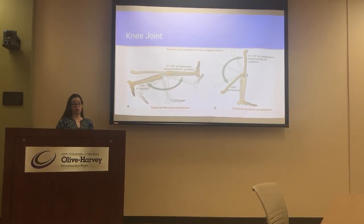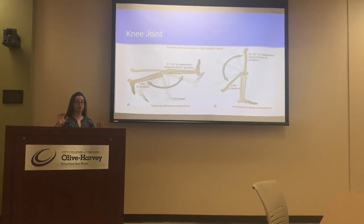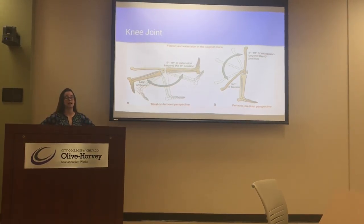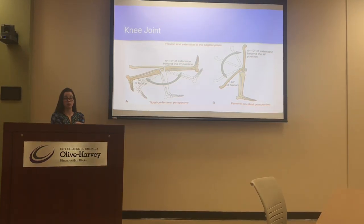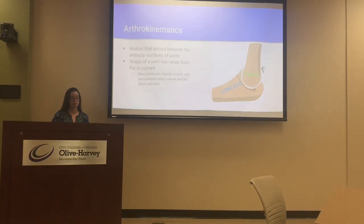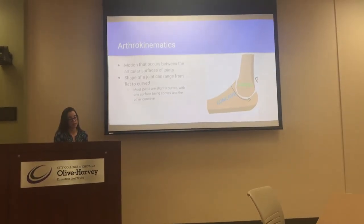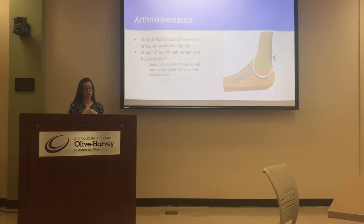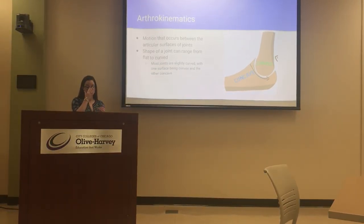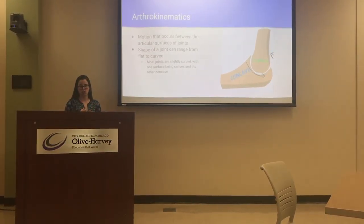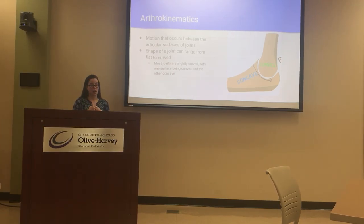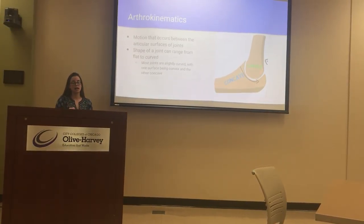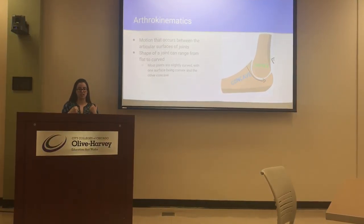Another example using the knee: open would be kicking the ball, whereas closed would be doing something like a squat or sitting down, because your foot is not moving when you're squatting. Arthrokinematics is the motion that our bones have in relation to each other as they're moving at that joint. The shape of the joint can range from flat to curved — most of our joints are slightly curved with one surface being convex and the other concave, which helps with different types of motion and the idea of interlocking.